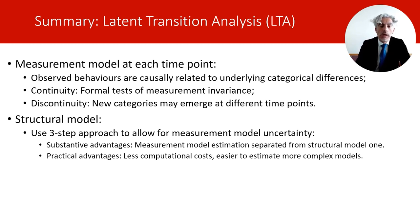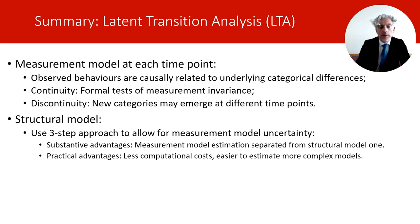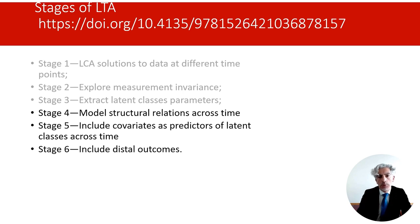Once we have selected one or a few optimal measurement models, we can extract the measurement parameters from these models and use the three-step approach to investigate the associations between latent classes across time, and also the association between those classes and other variables. In this presentation, we'll talk about these in more detail, following the outline of stages of latent transition analysis described in a linked chapter.